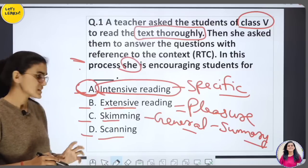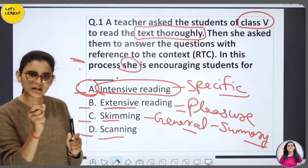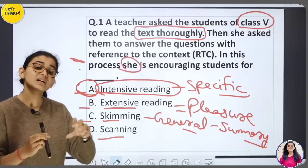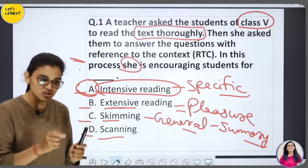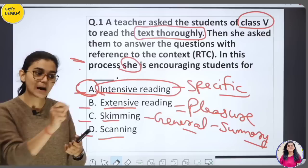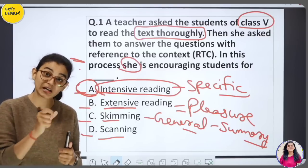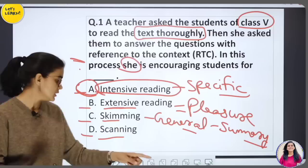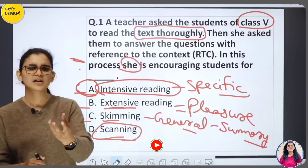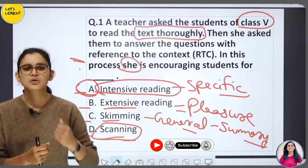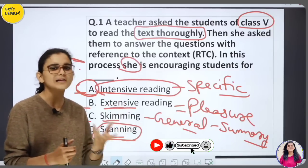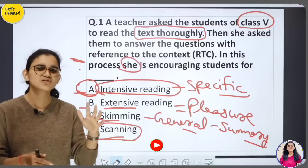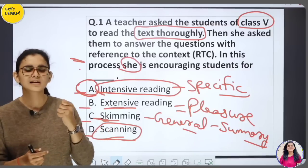Scanning is comparatively more word-to-word, where you have to find a specific detail. If a question asks for a particular specific detail from the paragraph, you will scan for it. But when you need a generalization, summary, or title, you use skimming — like skimming milk, you take what's on top and leave the rest.